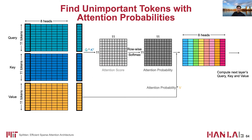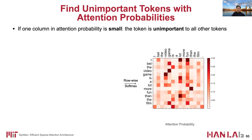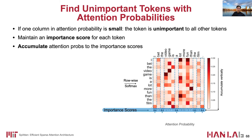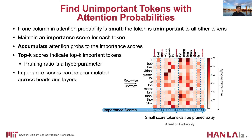The question becomes: how can we find those unimportant tokens? Recall that attention probability can be considered as the importance of each token to other tokens. Therefore, if one column of the attention probability matrix has very small magnitude, that means the corresponding token is not important to any other token. Looking at a real attention probability matrix, we maintain an importance score for each token and accumulate attention probabilities by column. Then we get the top-k largest scores and remove tokens with low importance scores. The pruning ratio is a predefined hyperparameter, and importance scores can be accumulated across heads and layers to make them more reliable.